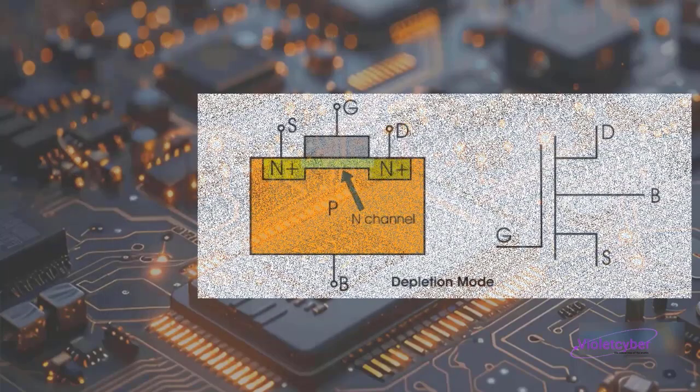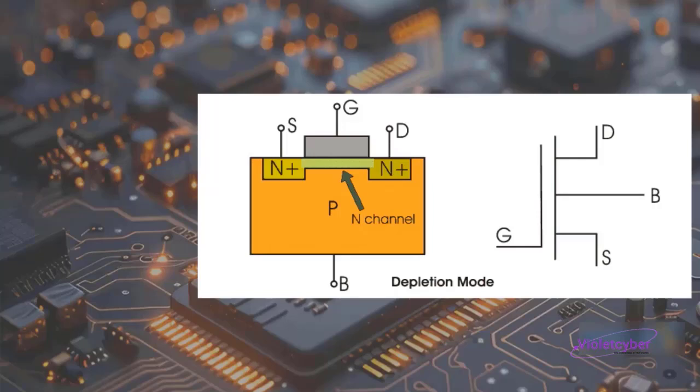Depletion Mode MOSFETs. In a depletion mode MOSFET, the connection between the source and drain pins is normally cut off. This remains the case until the gate pin receives a voltage, at which point the MOSFET starts conducting current and establishes a connection between the source and drain.